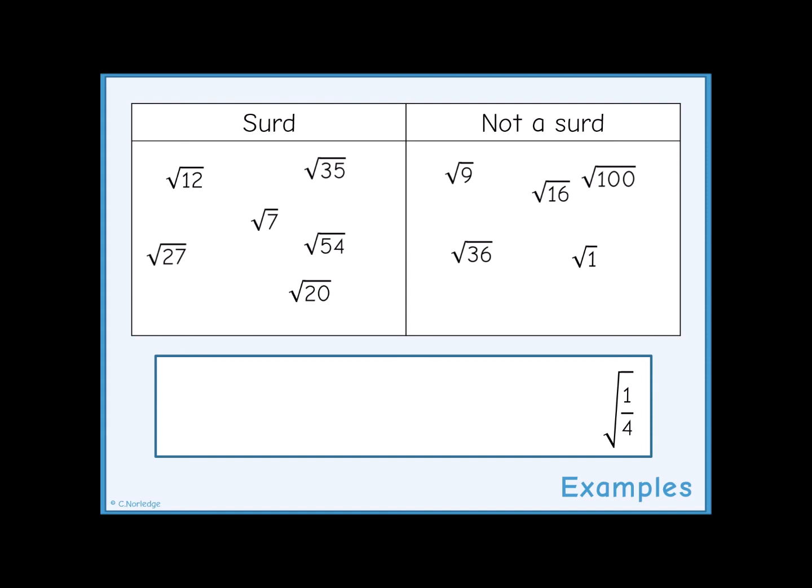Root one-fourth is one-half, because one-half multiplied by one-half is one-fourth. One-half is a simple fraction, it's not irrational, and is therefore not a surd.